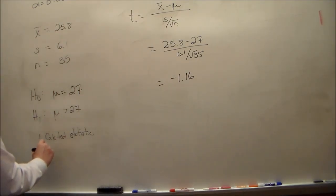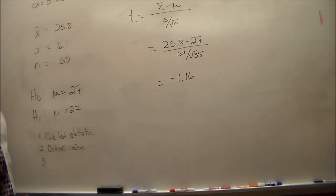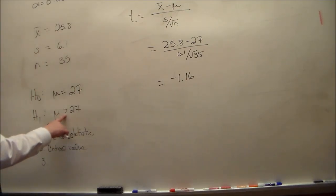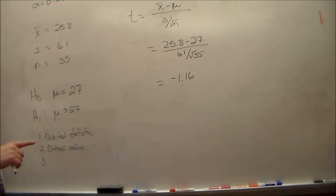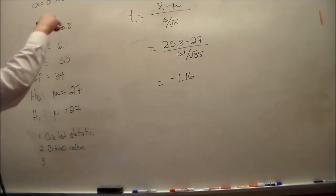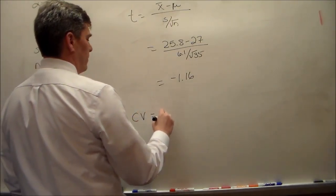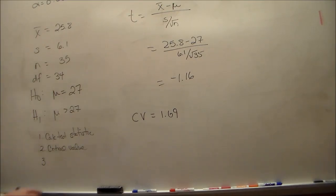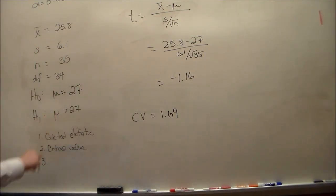So there's our test statistic. Step 2 is determine the critical value. Test statistic is t, therefore the critical value is going to come from a t-table. Alpha is 0.05, and it's a one-tailed test, and the critical value is going to be a positive number. So we go to the t-table. We look for a one-tailed test across the top at 0.05. Then we go down until we get to our degrees of freedom — for a one-sample test they're n minus 1 — so we go down until the degrees of freedom are equal to 34. Go across, and we see that the number is 1.69. If this had been mu less than 27, the critical value would be negative 1.69, but it's greater than 27, so it's a positive 1.69.